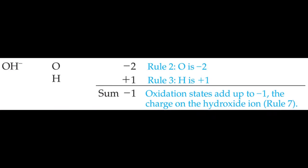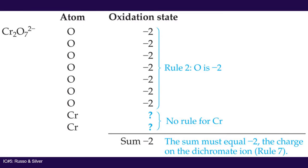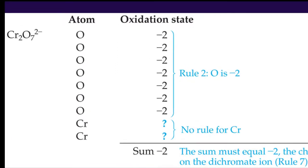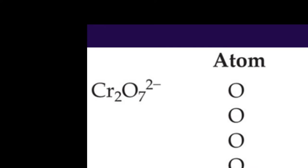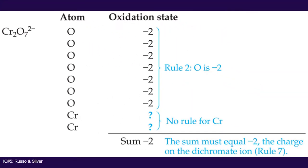The hydroxide ion has a negative 1 charge, and if you take the negative 2 for oxygen and the positive 1 for hydrogen, you end up with a negative 1 oxidation state — which matches. We can use this approach when we're unsure of an oxidation state. Take the dichromate ion, Cr₂O₇, with an overall charge of negative 2. We know each oxygen has a negative 2 charge, so with 7 oxygens that's a total of negative 14. For the ion to have a negative 2 charge, the two chromiums together must contribute positive 12, meaning each chromium has a positive 6 oxidation state.